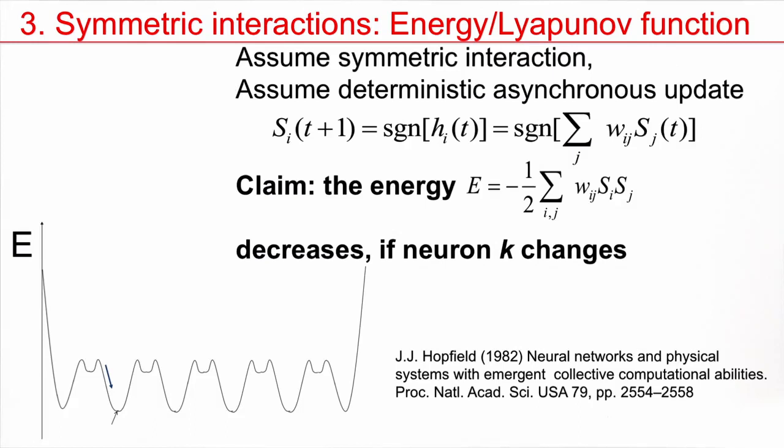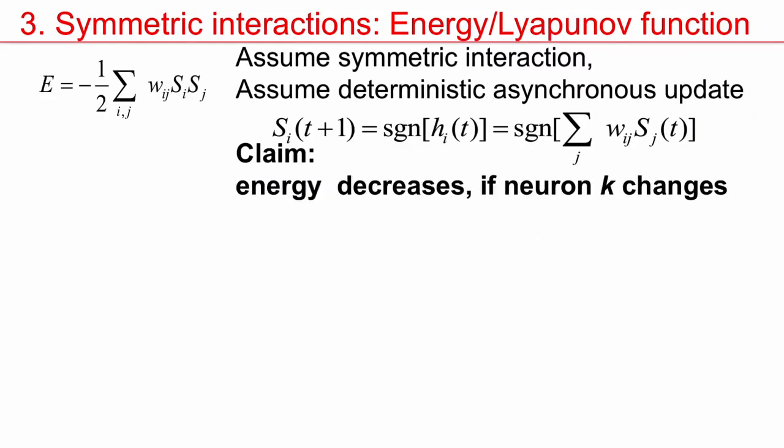However, I have not shown you that the dynamics would actually lead downward, down, towards one of the minima. But here we have a nice theorem. Let's define an energy function as before. And let's assume symmetric interactions. That means the weight W_IJ, which is from neuron J to neuron I, is the same as W_JI. Then we assume deterministic asynchronous updates, which means that I update one neuron at a time. Then the claim is that our energy decreases if one of the neurons, for example neuron K, changes its state.